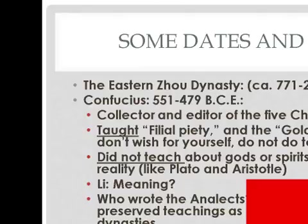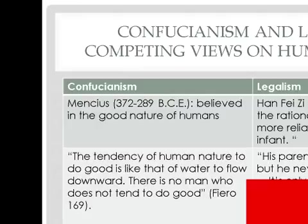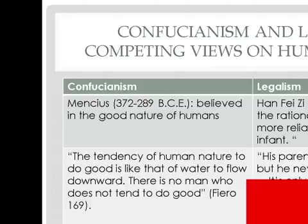Warring States Period, 403 to 222 BCE. Confucianism and Legalism offered conflicting views on human nature. Mencius (372–289 BCE) believed in the good nature of humans — 'The tendency of human nature to do good is like that of water to flow downward; there is no man who does not tend to do good.' Han Fei (d. 233 BCE) held that human rationality was not reliable, arguing that a young man changes his ways only after a magistrate sends soldiers in the name of the law, forcing him to become afraid and alter his deeds.